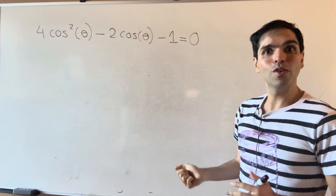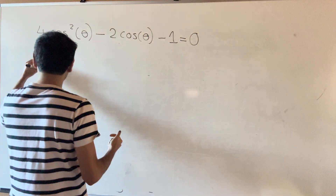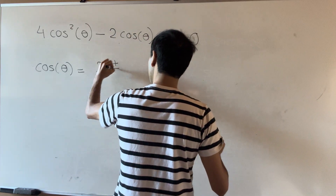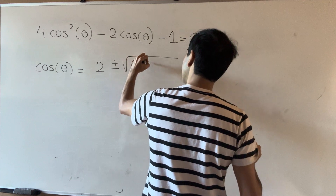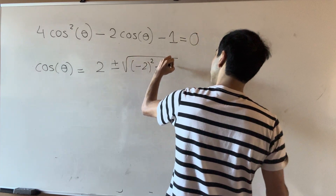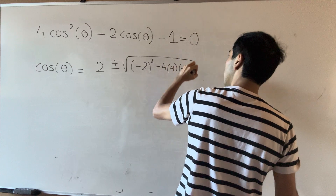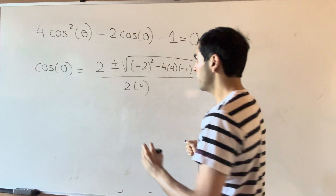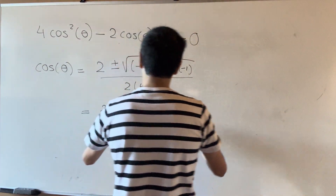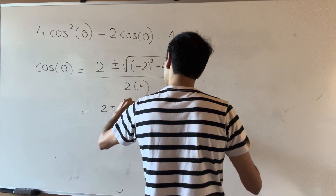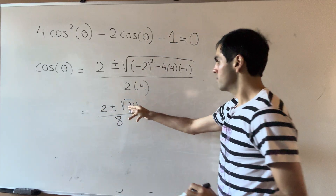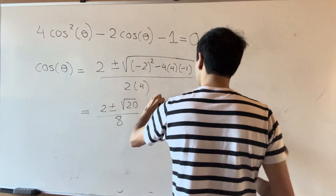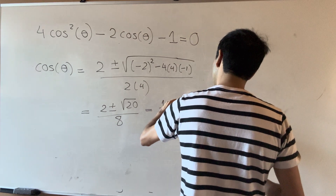Using the quadratic formula, cosine theta equals negative b — so two, plus or minus the square root of negative two squared minus four times four times negative one — over two a, which is over two times four. This becomes two plus or minus square root of twenty over eight. But square root of twenty is two square root of five, so in the end we have one plus or minus square root of five over four.